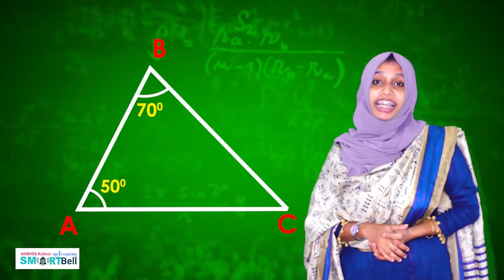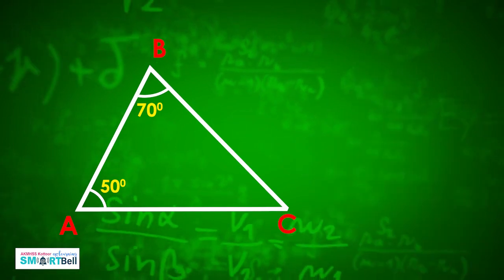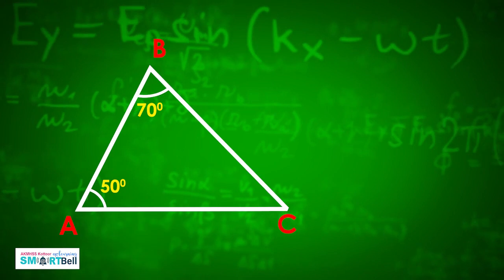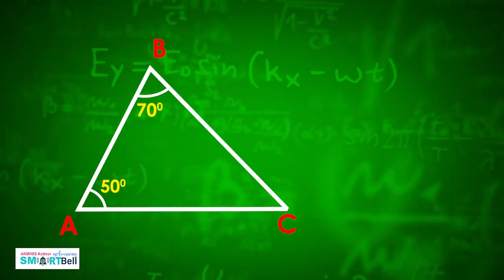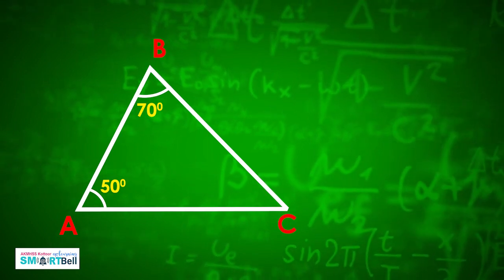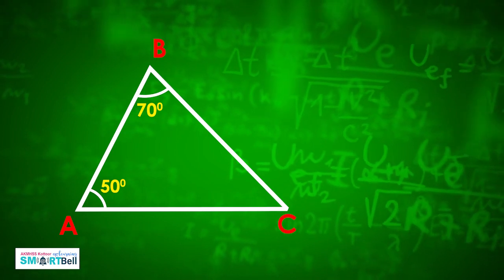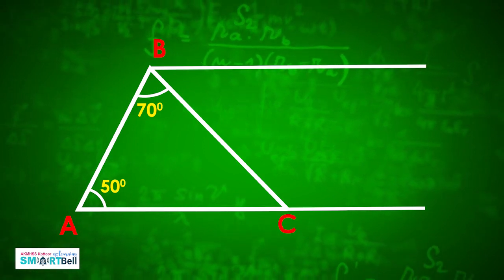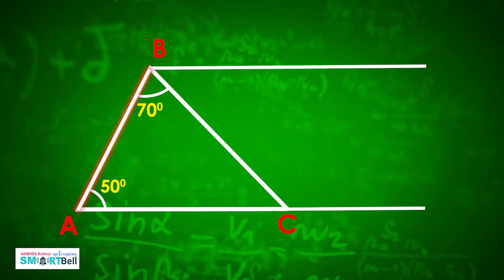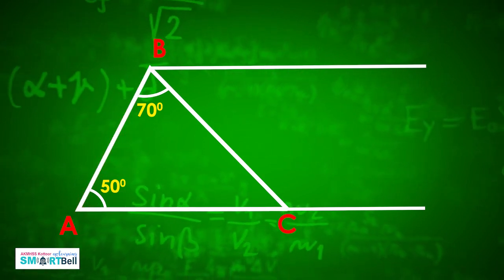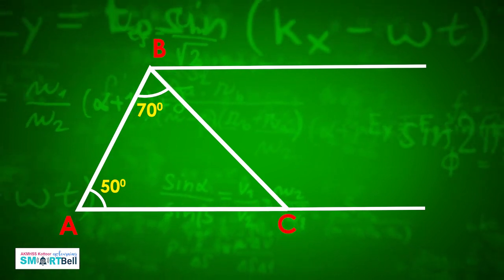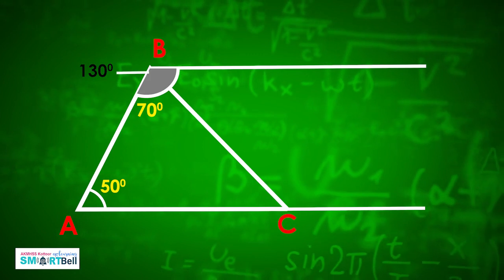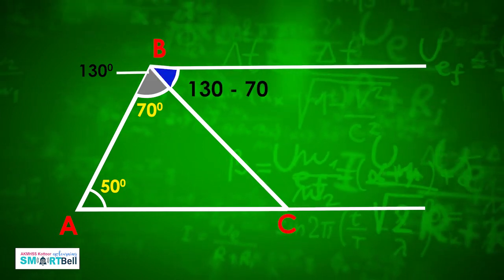Here, two angles are given in a triangle and we need to find out the third angle. We have already learned co-interior angles and alternate angles. We have to extend a line because there are no parallel lines here, so we make a parallel line by extending AC and drawing one from B as well. These two lines are now parallel and this is the transversal. We know co-interior angles are supplementary, so here 180 minus 50 equals 130. Then 130 minus 70 equals 60 degrees.